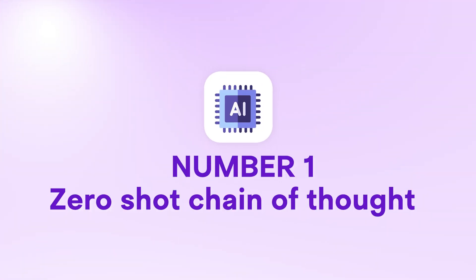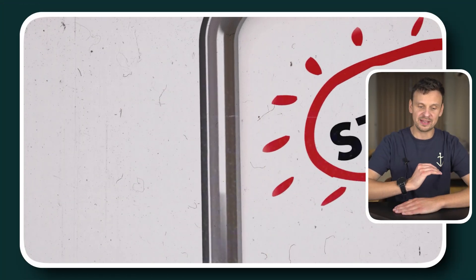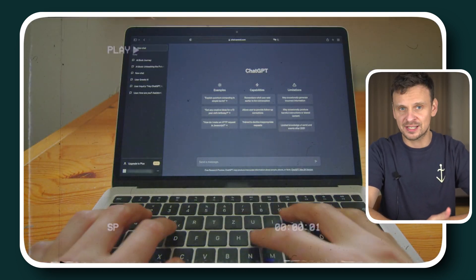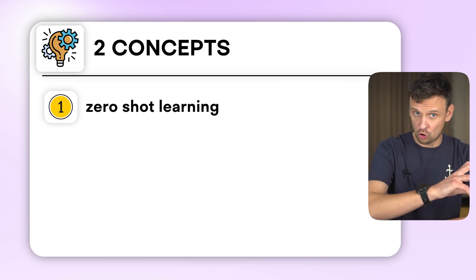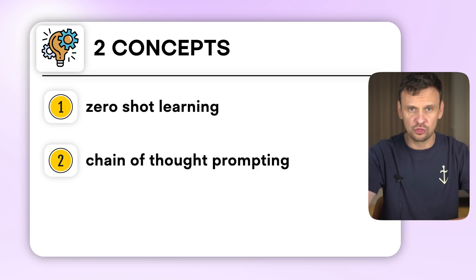Let's begin with zero-shot chain of thought prompting. As complex as it sounds, I'll break it down step by step so that you can understand it and start using it for your own prompting. Once I explain the theory, I'll also share multiple examples. This approach combines two concepts: zero-shot learning and chain of thought prompting.